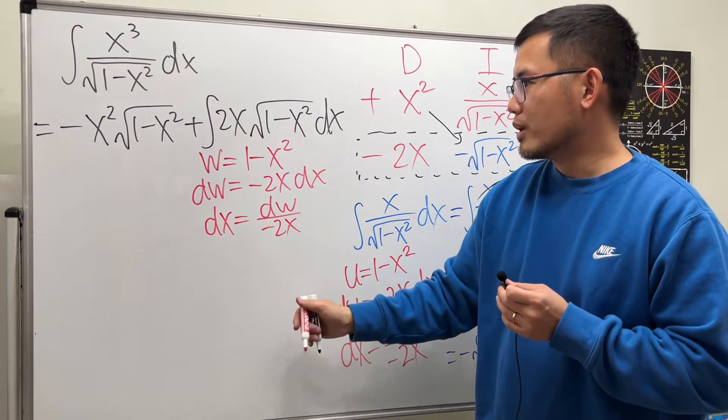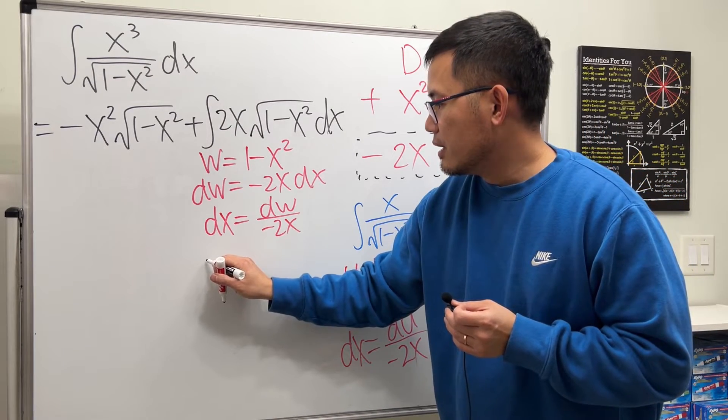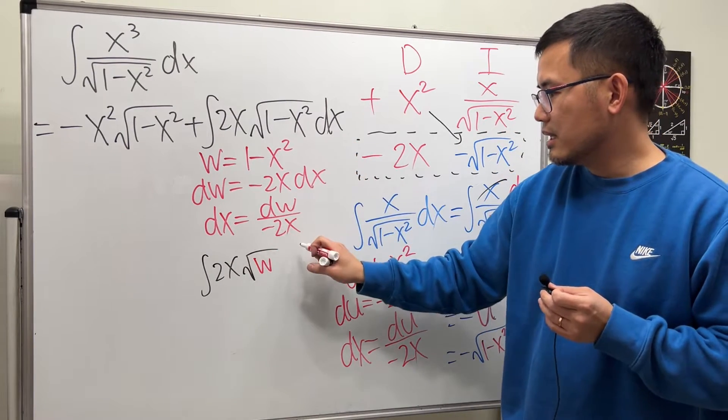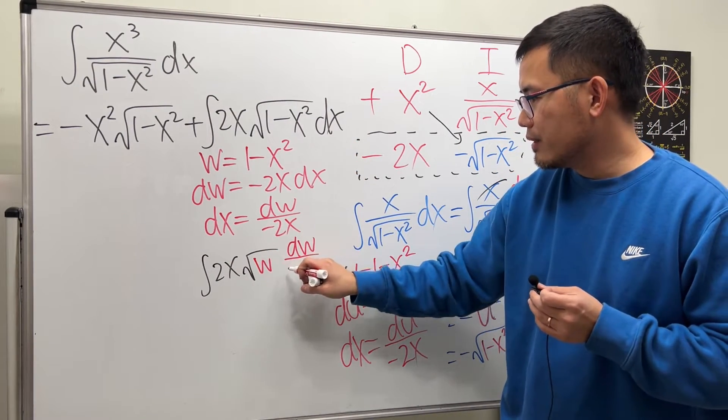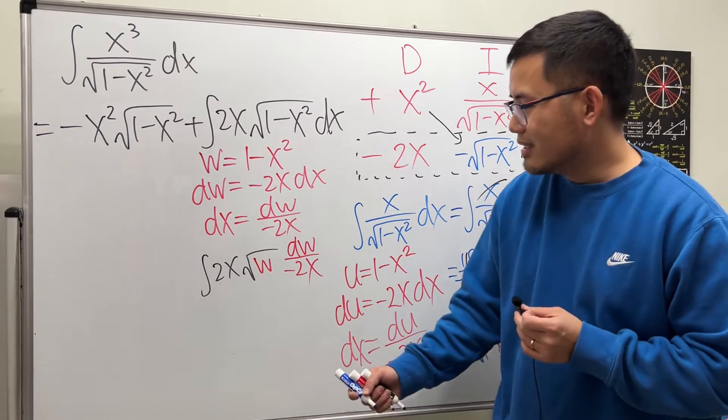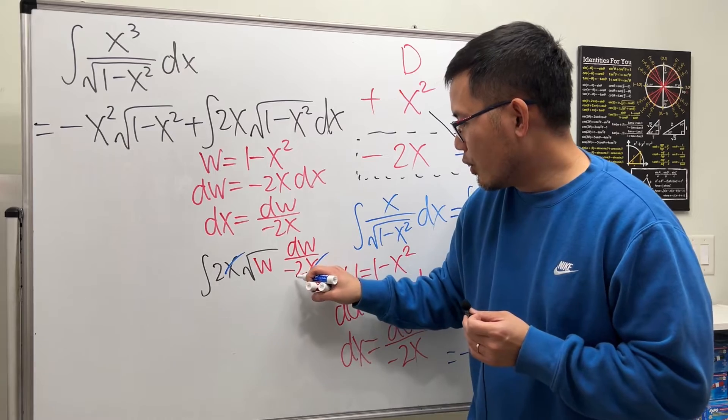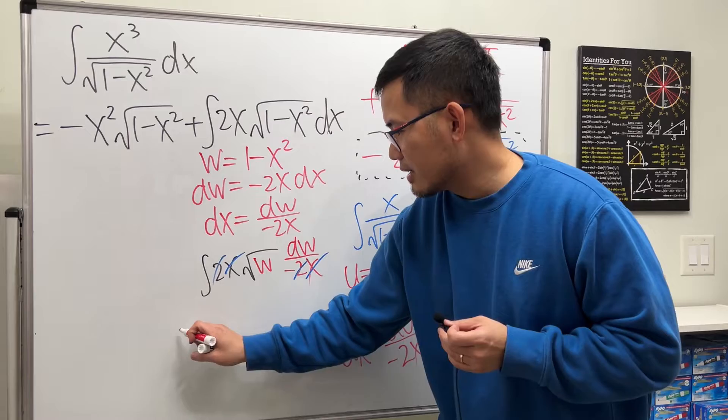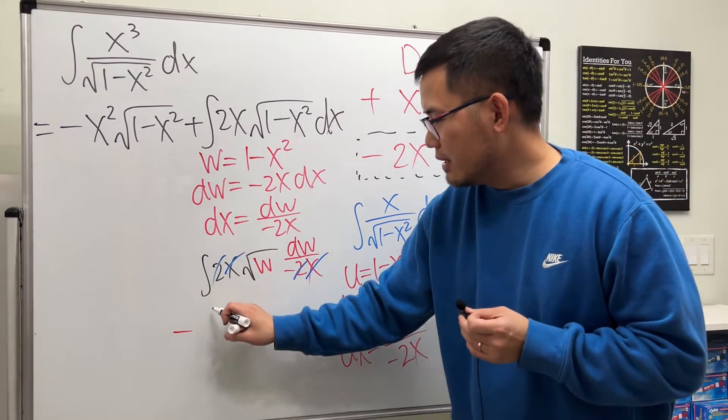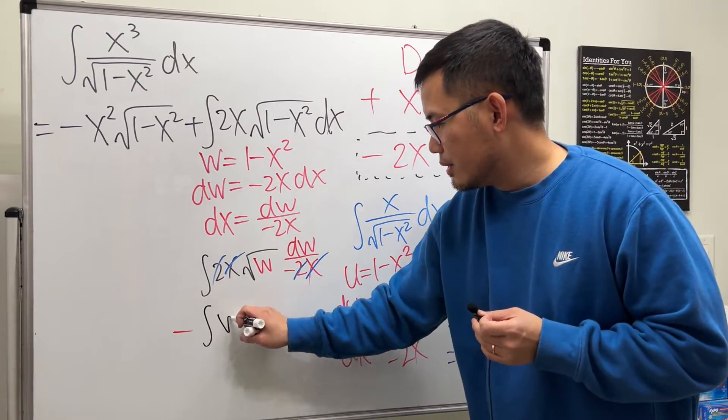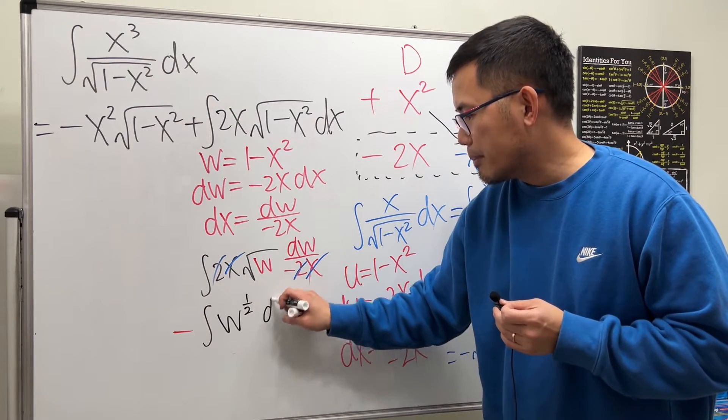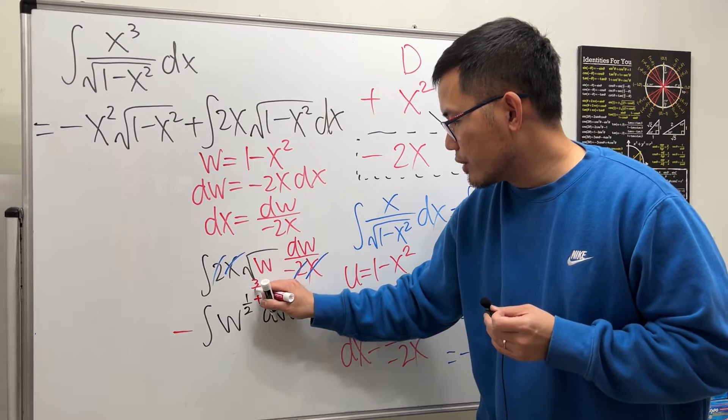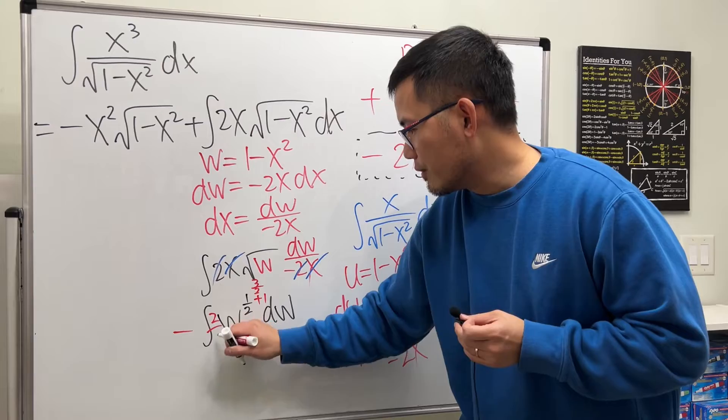Put this to the w world. We have the integral 2x square root of w, and then dx is dw over negative 2x. It just works so nicely. x and x cancel. Moreover, 2 and 2 reduces. We have a negative, so make sure we have the negative on the outside here. And then we have to integrate w to the 1 half power in the w world. Add 1 to the power, we get 3 over 2. Divided by the new power, we have 2 over 3.